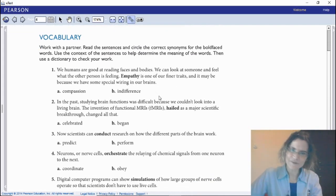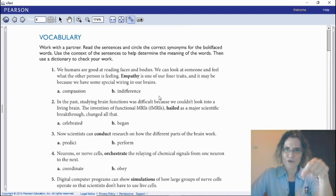Read the sentences and circle the correct synonym. What is a synonym? A synonym is another word which has the same meaning. Word family—many words that are all related, all have similar meaning: synonyms. So circle the correct synonym for the bold-faced words. Use the context of the sentences to help determine the meaning of the words.